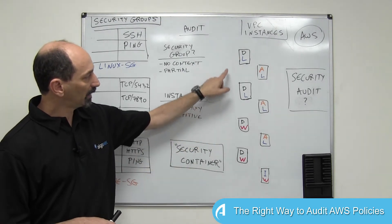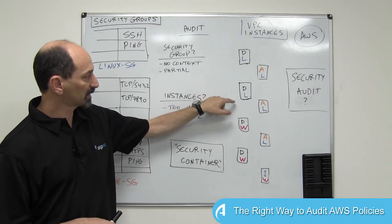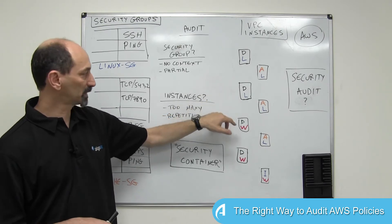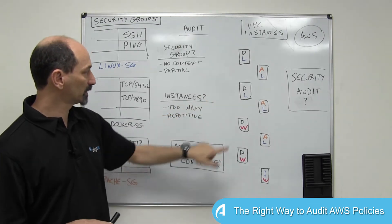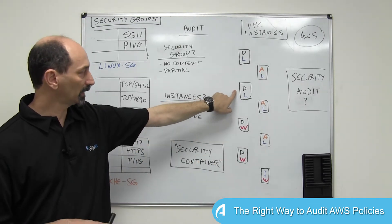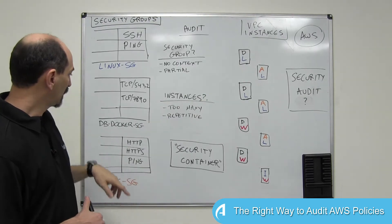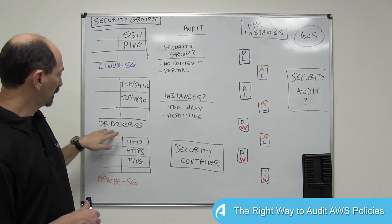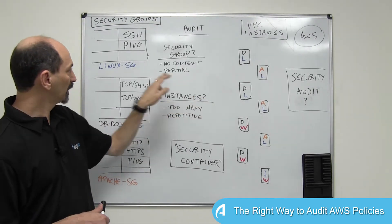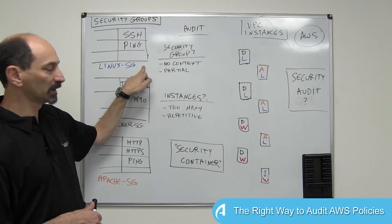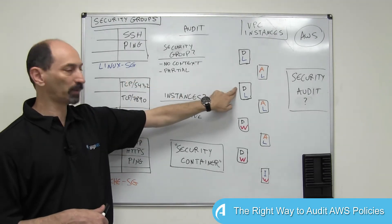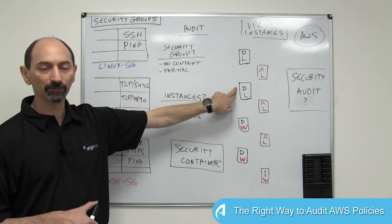And here I've sketched instances that have two security groups associated with them. So let's say this one over here has both the database security group associated with it and also the blue Linux security group associated with it — so both of them together.